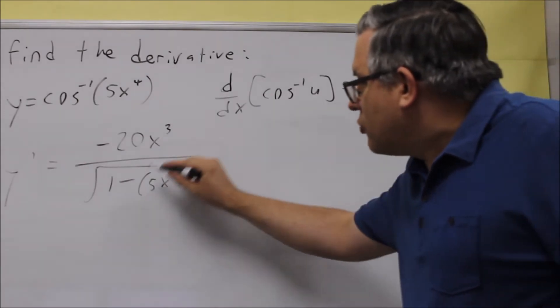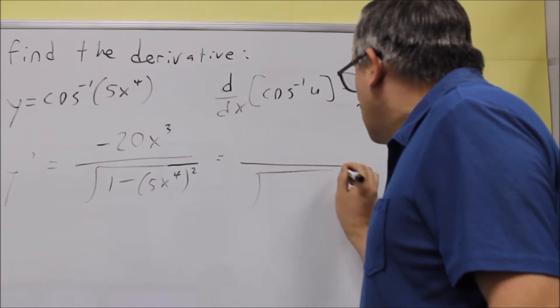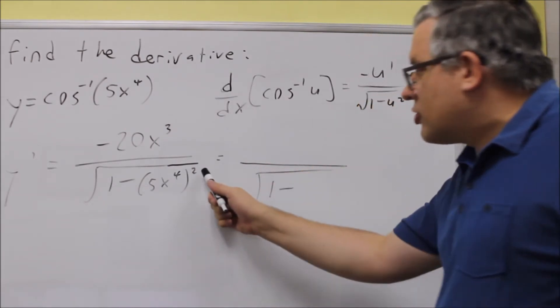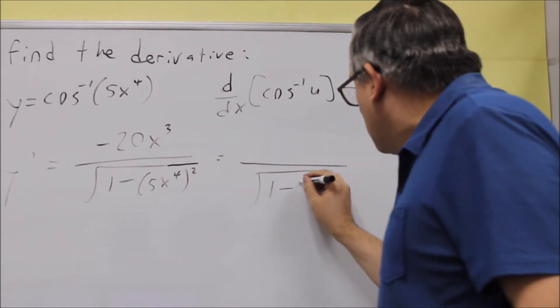So then the next thing we can do is we can just square both things on the inside there to get our final answer. That's going to be 1 minus, now when you square it, don't forget to square the 5 inside as well. So we're going to get 25.